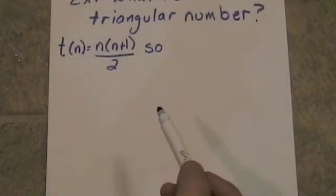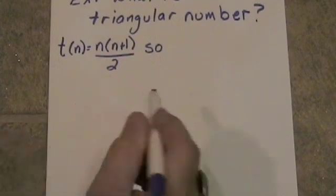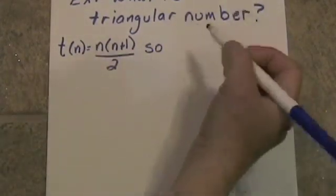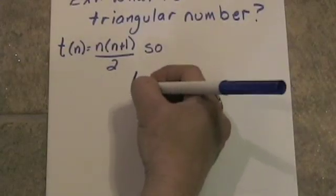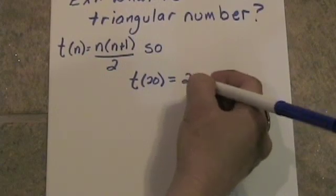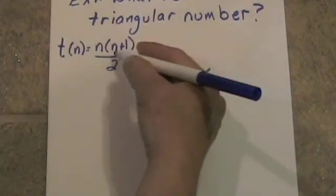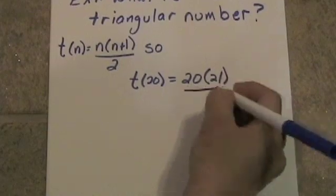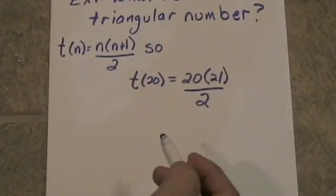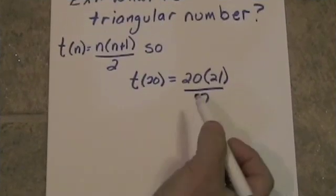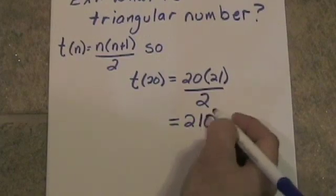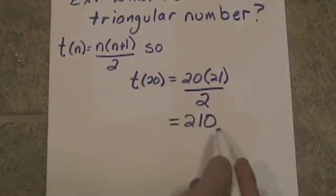We want to find the 20th triangular number. So, we're just going to put an argument of 20 in here for the n. So, we would say that t is equal to 20 times, 20 plus 1 is 21, and that's all going to be divided by 2. It goes into 20 10 times. And 10 times 21 is 210. So, t of 20 is 210.